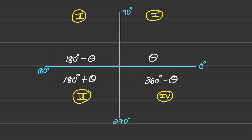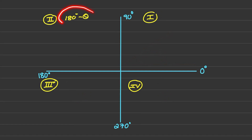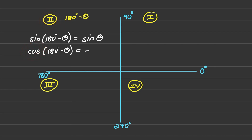Let's focus on quadrant two. If I have sine of an angle in this quadrant and rewrite it as an acute angle, I know that sine is positive in quadrant two, therefore sine of (180 minus theta) equals sine of theta. If I have cosine of an angle in the second quadrant, cosine is negative there, so it reduces to negative cos of theta.